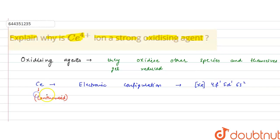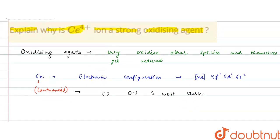And for lanthanoids, +3 oxidation state is more stable. +3 oxidation state is the most stable oxidation state.